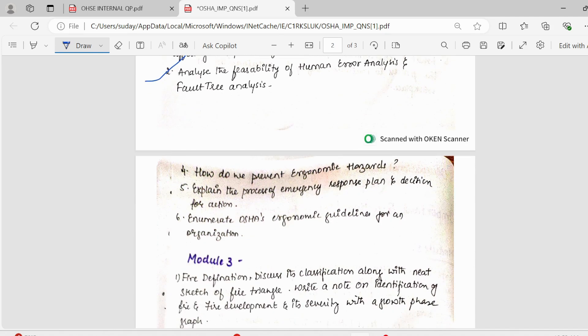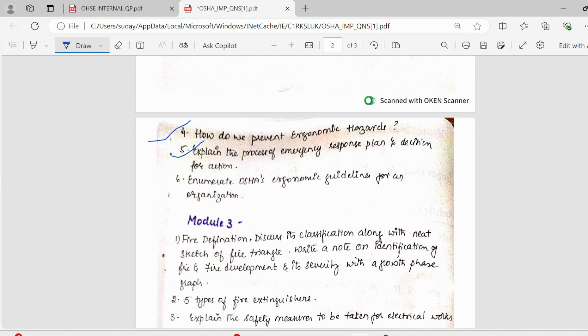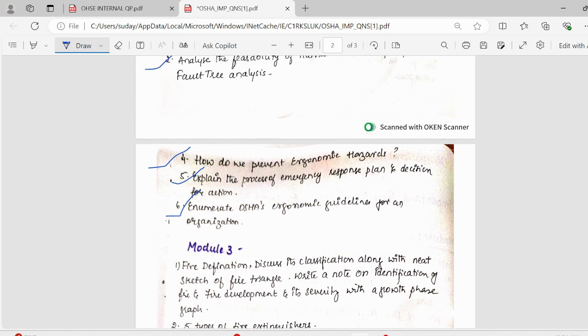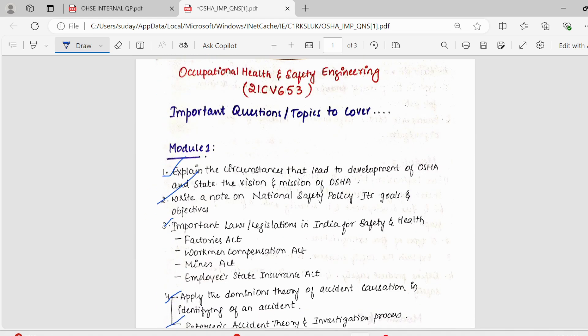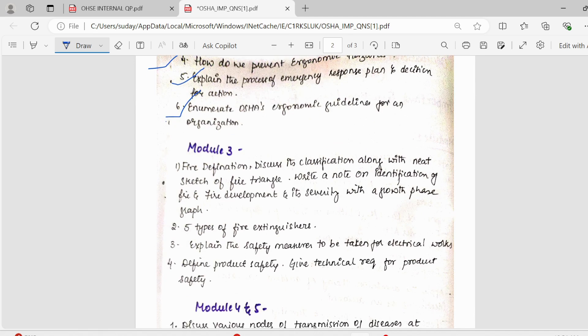Then, moving on to the next question, we have how do we prevent ergonomic hazards? This could be clubbed with the first question only, a 10 mark question. Then, we have explain the process of emergency response plan and detection decision for action. This is an important question. Then, enumerate OSHA's ergonomic guidelines for an organization. I have noted down nearly six to seven questions for each module, which comprise of all the important topics in this module. If you have covered these questions, you'll be thorough with the possible questions from these modules. After this, you can look into the other topics also. But for these, you should be perfect with the answers.